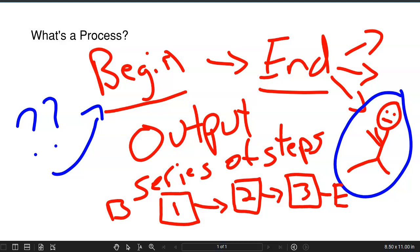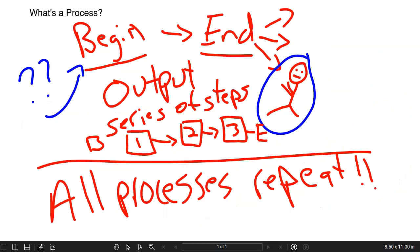Finally, all processes repeat. I can't emphasize this last statement enough. When we're working on a process improvement initiative, we should be working on a process. It's got to have a beginning and an end. There has to be some sort of output that's created. There's a series of steps that creates that output. And it's happened over and over and over again.